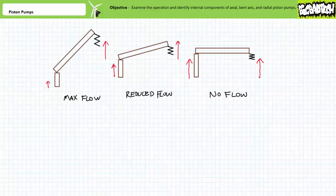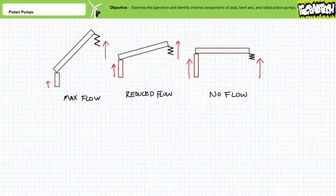Some textbooks depict variable displacement piston pumps with a maximum negative angle as having no flow — this is wrong. A swash plate held at a maximum negative angle would produce maximum reverse flow. Additionally, the spring and piston pair is not the only method used to vary the angle. Some advanced variable displacement piston pumps use solenoids, a type of linear electrical actuator, to electrically position the angle of the swash plate with great accuracy and control.